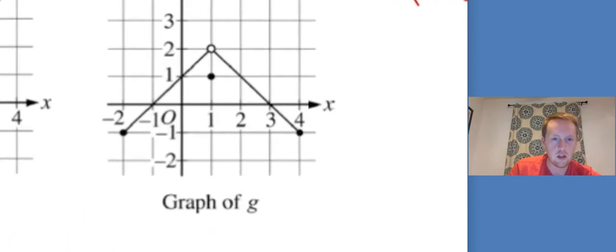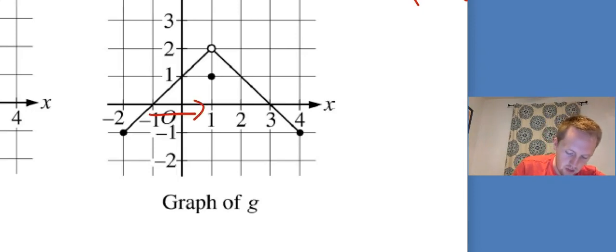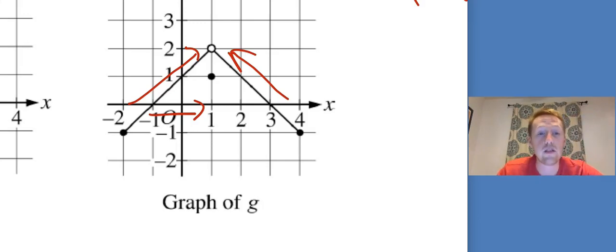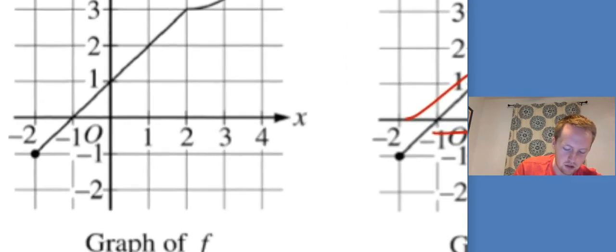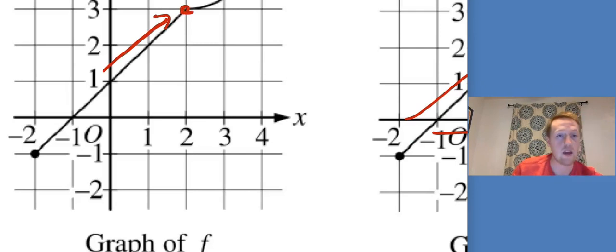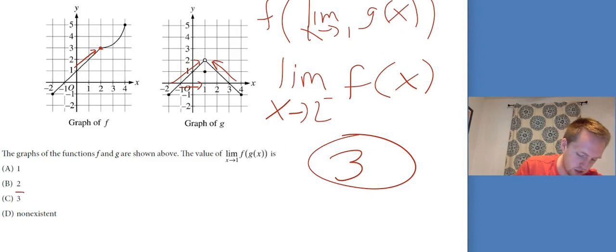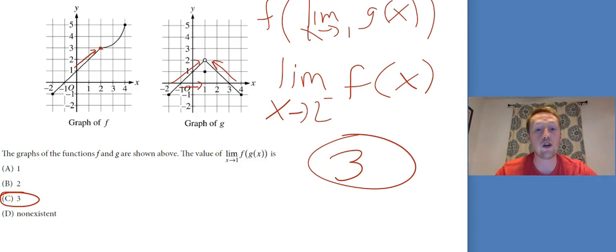We're going to do the limit as x goes to 1 for f of g of x. We bring that limit inside, so it's f of the limit as x goes to 1 for g of x. As x goes to 1, the y value is going to 2 from the left and from the right. But if you look at the arrows, they're both coming to 2 from values below 2. So our limit becomes the limit as x goes to 2 from below for f of x. As x goes to 2 from the left, we're going to 3. So this is just 3, which is C.